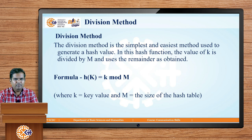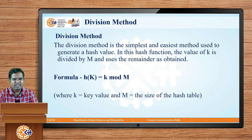The first type is the division method, which is the simplest and easiest method used to generate the hash value. In this hash function, the value k is divided by m, where m is the size of the hash table, and the remainder obtained is used as the index to store the value inside the hash table. The formula is: h(k) = k mod m, where k is the key and m is the size of the hash table.